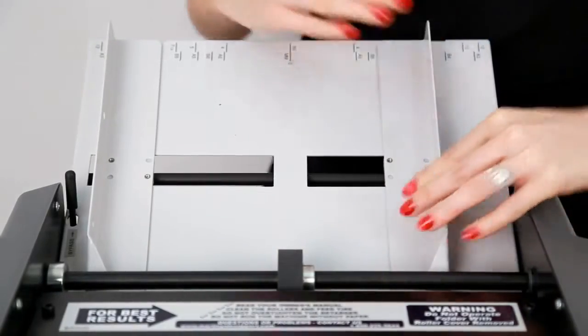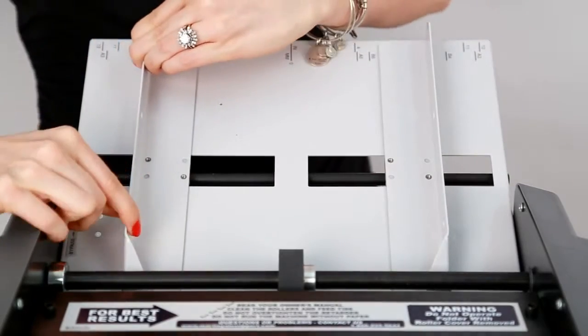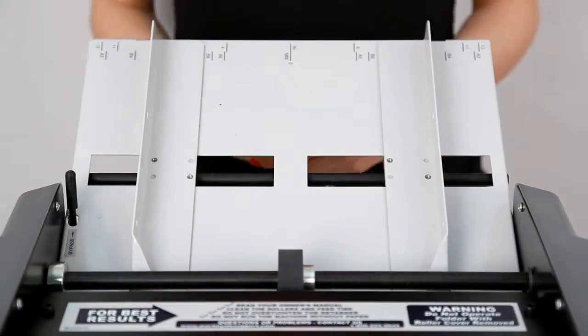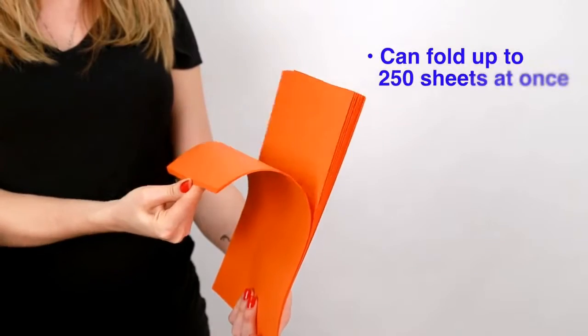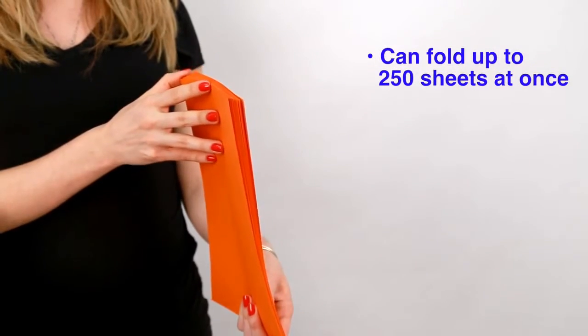Next, adjust the paper guides on the feed table assembly to the desired paper type to be folded. Make sure to first jog and fan the paper before placing it into the feed table assembly.